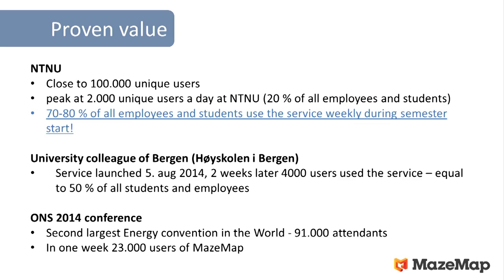We've seen huge pickup with our service. Together with Cisco, we won a bid at the University College of Bergen, provided the network together with a Cisco partner, and launched for semester start. Just two weeks after semester start, the service peaked at 4,000 unique users — half of all students and employees at campus. At the ONS conference, the second largest energy convention in the world next to Houston, we had 91,000 attendees last year, and 23,000 of them used MazeMap. So we know we're solving a difficult challenge.